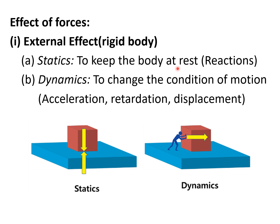In statics, our objective is generally to calculate the support reactions. In dynamics, our objective is to talk about the various parameters involved in the motion condition — that is acceleration, retardation or displacement. You see both the diagrams. In statics, the box is at rest; even its weight is downward, it gets support from its base. In dynamics, the box is moving with some acceleration and displacement.